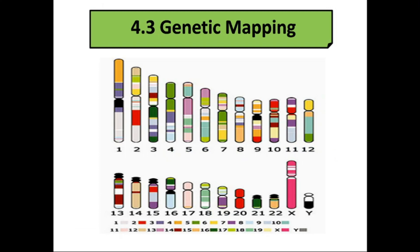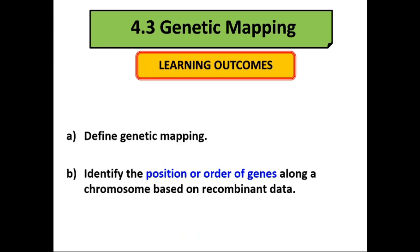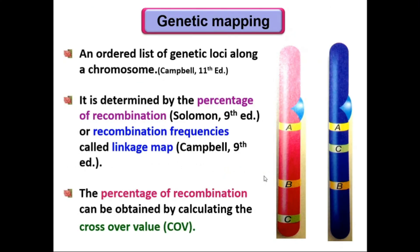The last topic in this genetics chapter is genetic mapping. You should be able to define genetic mapping and identify the position and order of genes along a chromosome based on recombinant data. According to Campbell, genetic mapping is an ordered list of genetic loci along a chromosome, determined by the percentage of recombination — also called recombination frequencies — known as a linkage map. This percentage is obtained by calculating the crossover value, or COV.